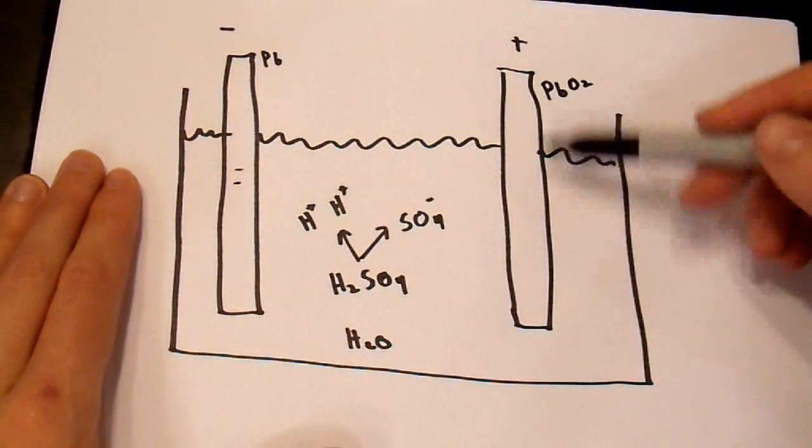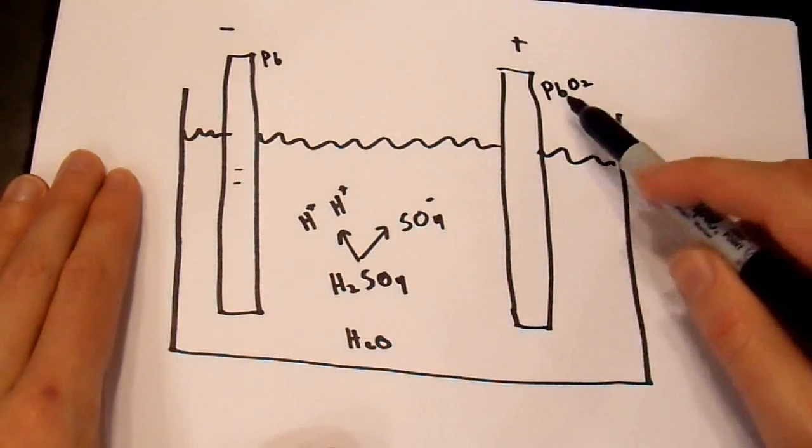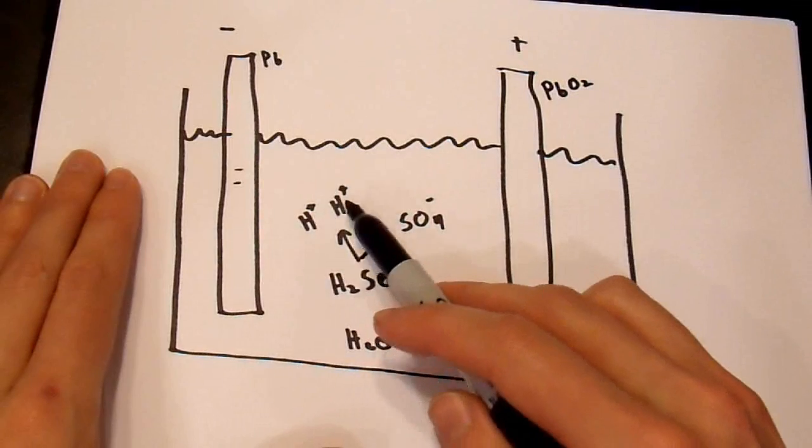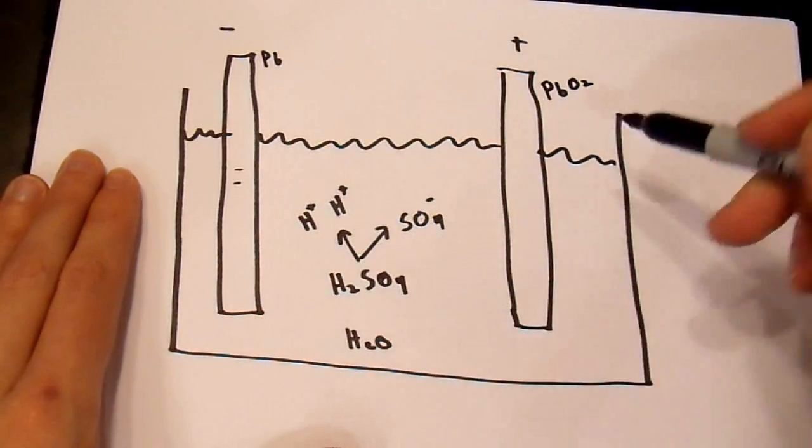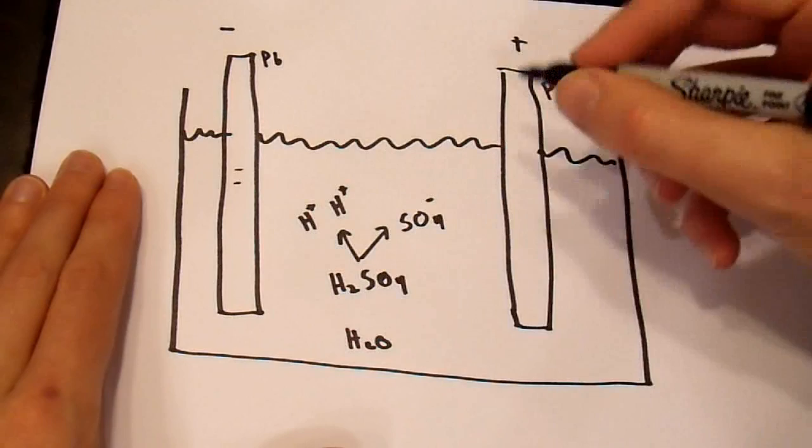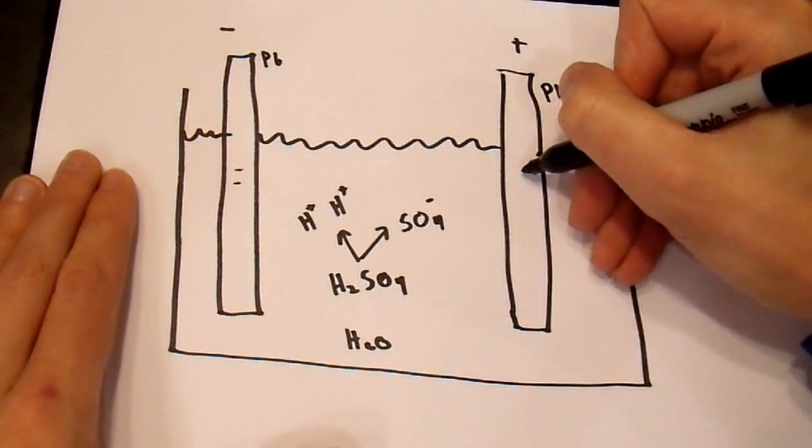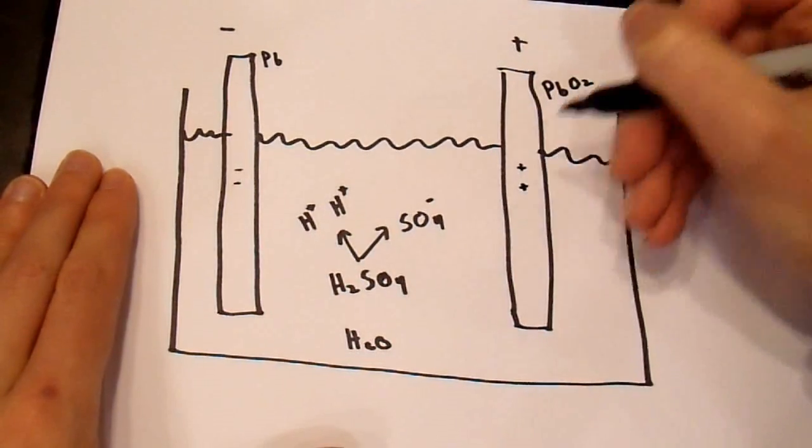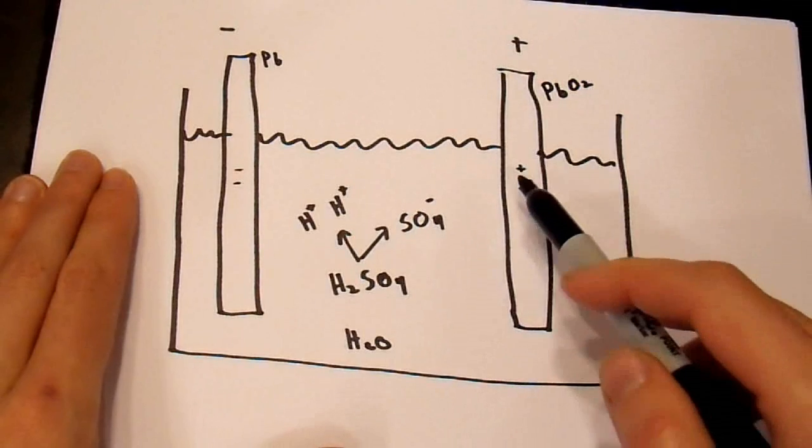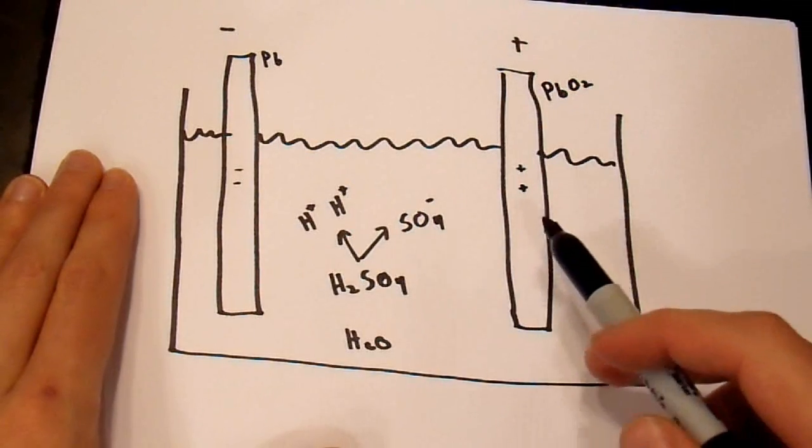Every molecule of lead sulfate that forms, you get two electrons in this negative electrode. The positive one, on the other hand, this lead dioxide reacts with the hydrogen ions. And, every time a hydrogen ion reacts with this, you get essentially a positive charge over here. And, the positive charge happens because those ions are stolen, basically.